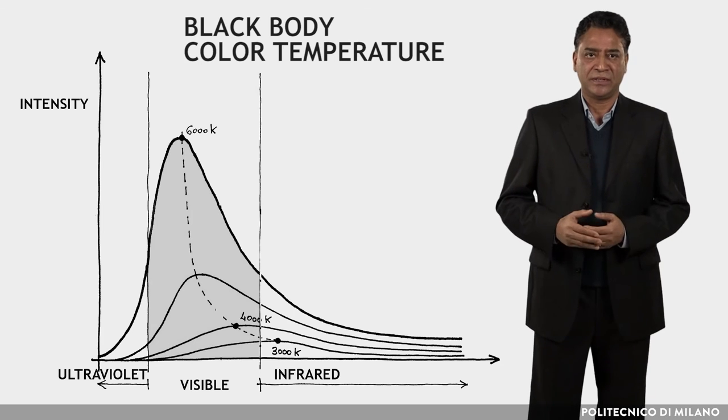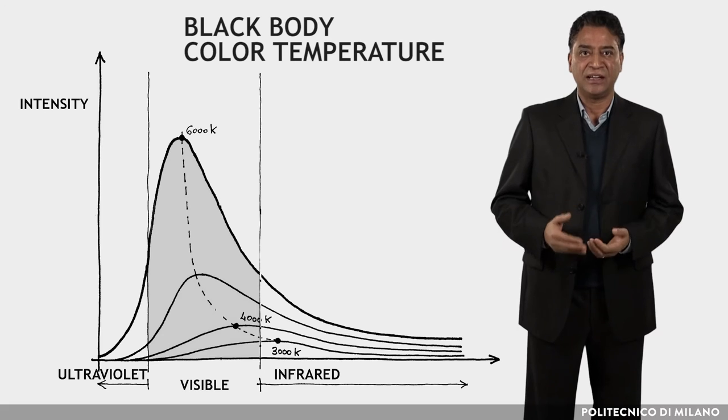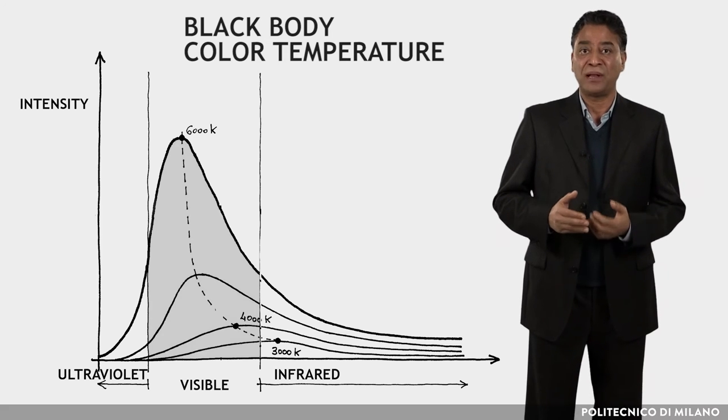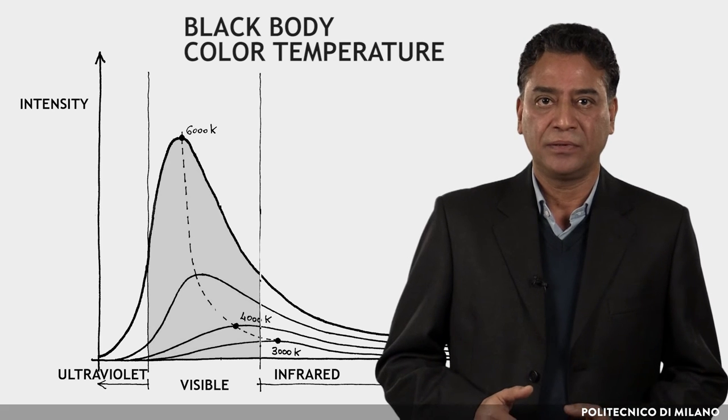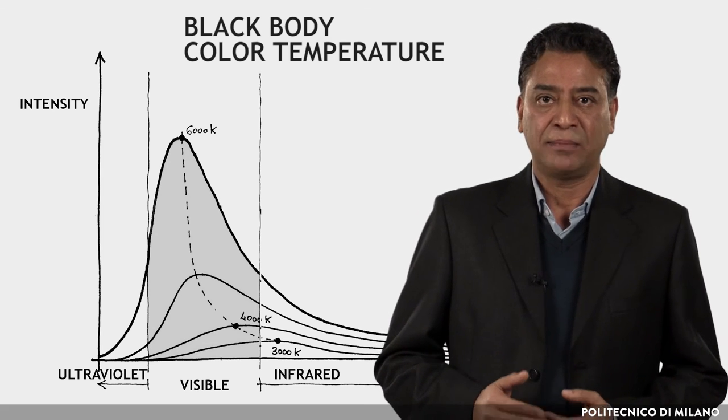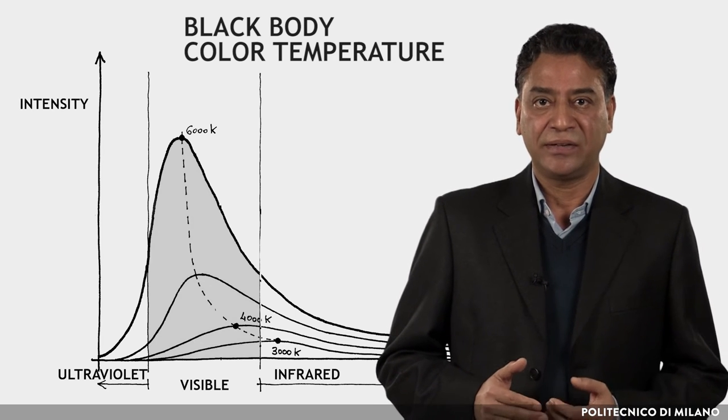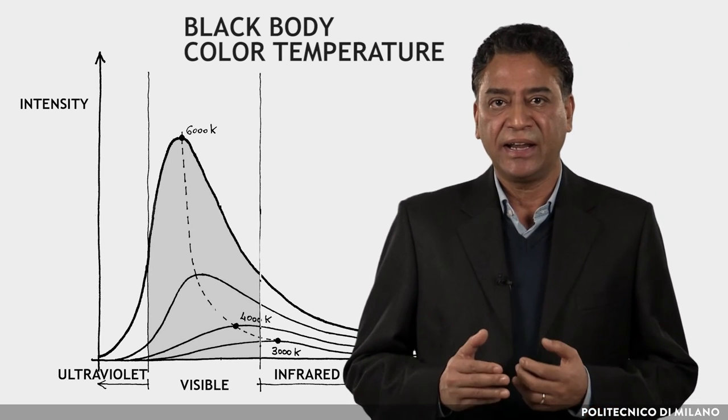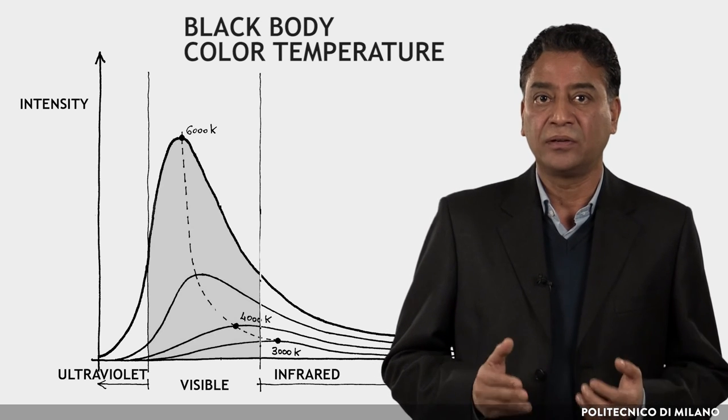The color temperature is a parameter used to identify and categorize in an objective way the color of light from a light source compared to a black body sample source. To say that a lamp has a color temperature of 3000 Kelvin means that the black body at this temperature emits light with the same emission spectrum. Light sources are divided into three groups depending on the color temperature as shown in the figure.